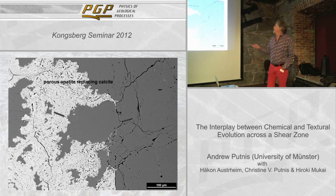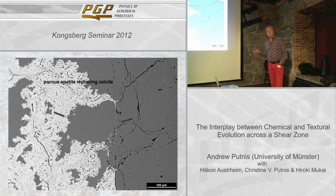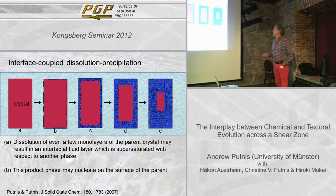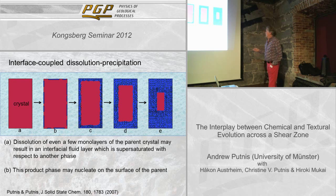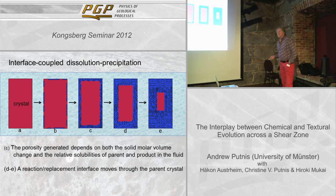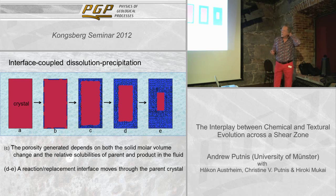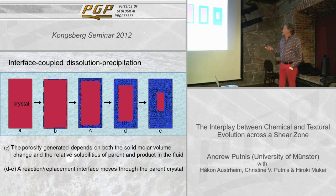I think you can see the kind of potential of this sort of simple experiment for modelling flow along grain boundaries — that's one of the projects in this new Marie Curie thing. So here's a little cartoon of interface-coupled dissolution-precipitation just to round this up. We have a crystal, we have a fluid; the dissolution of even a few monolayers of the parent may result in an interfacial layer which is supersaturated. This product phase may nucleate on the surface of the parent.